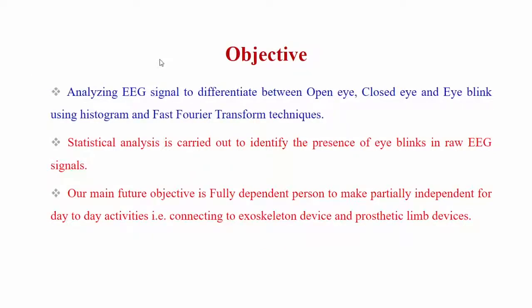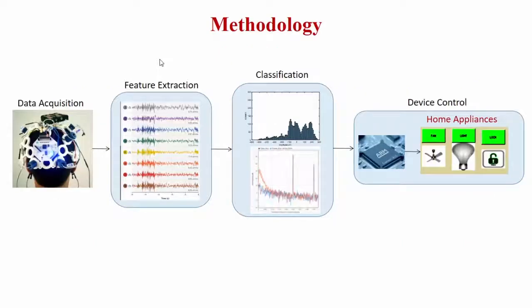The objective is to analyze EEG signals to differentiate between open eye, closed eye, and eye-blink conditions using histogram and short-time Fourier transform techniques. Statistical analysis is carried out to identify eye-blinks from the raw EEG signal. The main goal is to make a fully dependent process into a partially independent one, enabling day-to-day activities such as connecting to exoskeleton and prosthetic limb devices.